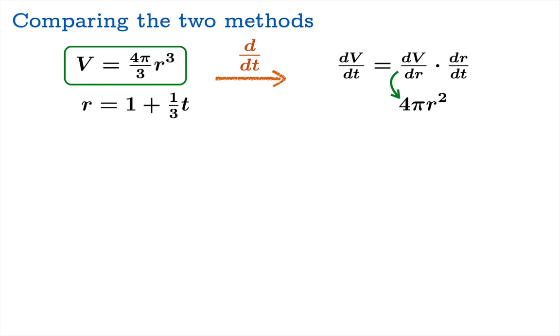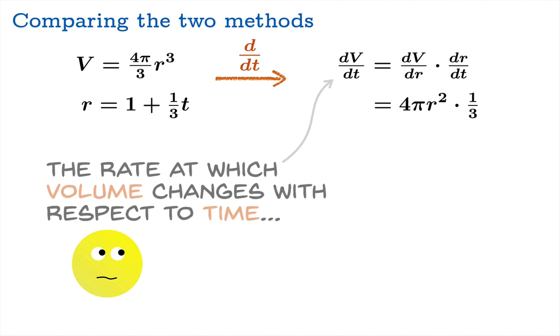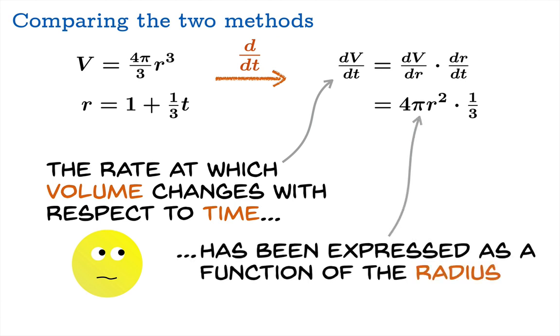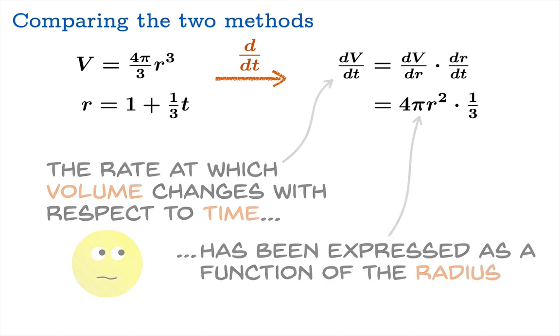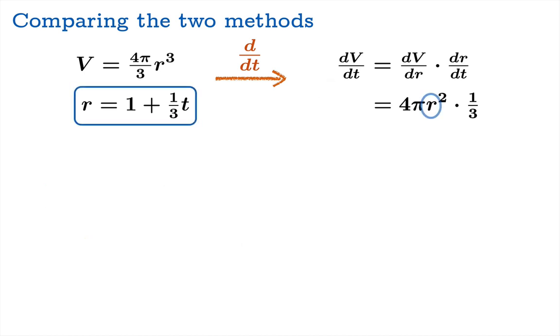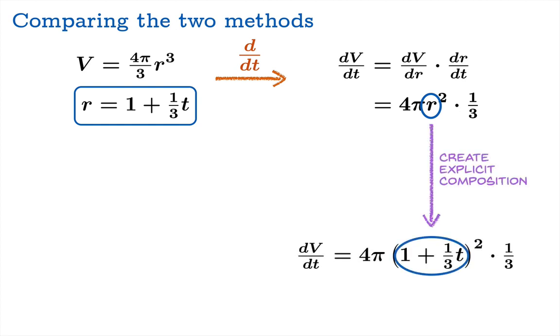And then we were able to calculate dv dr given our formula, and we were able to calculate dr dt given our formula. Now you'll notice that the rate at which volume changes with respect to time is, in this case, expressed as a function of the radius. If you wanted it expressed as a function of time, you could use this bit of information, plug it in here to r, and create an explicit composition. And we'll just simplify this. And we see that dv dt is equal to 4 pi over 3 times the quantity 1 plus 1 third t squared.